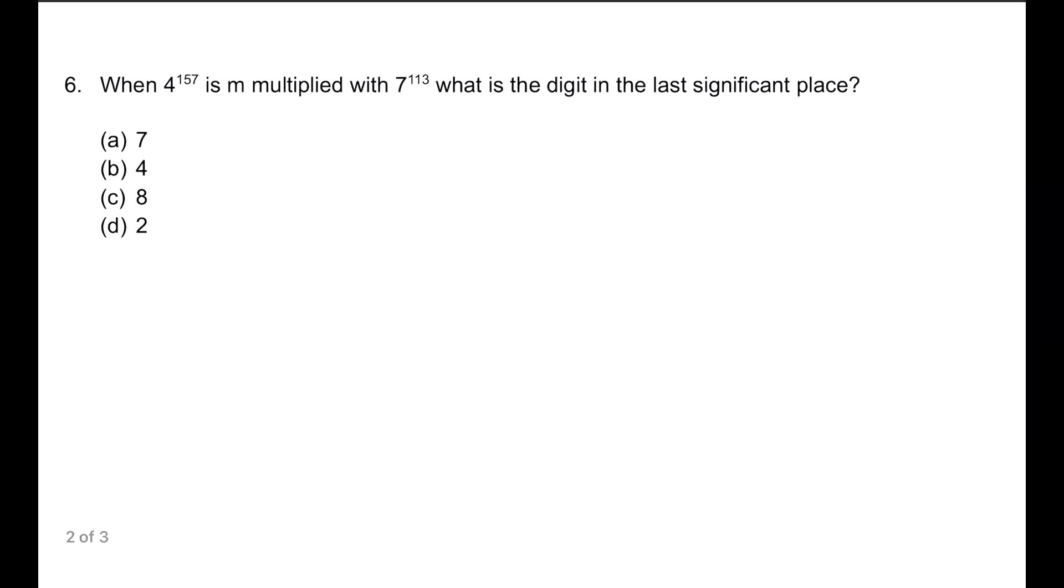Coming to the sixth question. When 4 to the power 157 is multiplied with 7 to the power 113, what is the digit in the last significant place? Last significant place means unit digit. This involves the concept of cyclicity. If you have the material very good, if you don't, then go to telegram, mega link, and get the material from there.